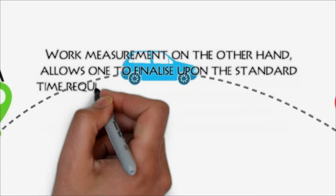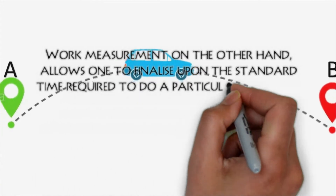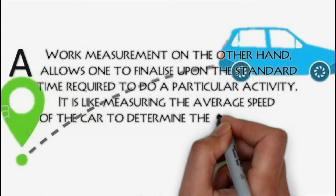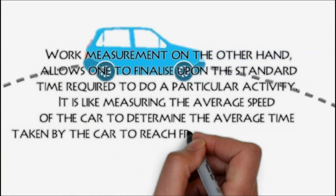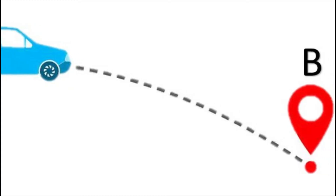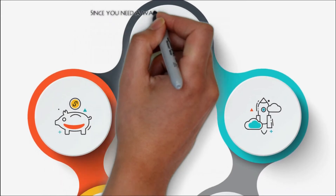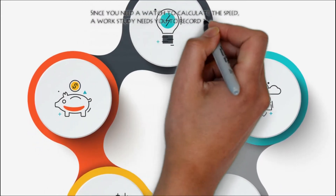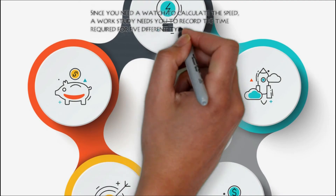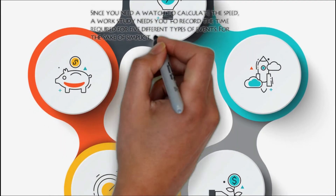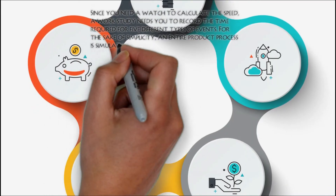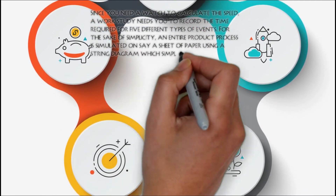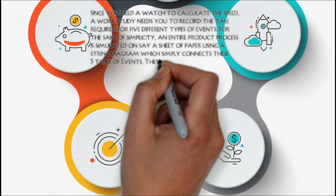Work measurement, on the other hand, allows one to finalize the standard time required to do a particular activity. It is like measuring the average speed of a car to determine the average time taken by the car to reach from place A to place B. Since you need a watch to calculate the speed, a work study needs you to record the time required for five different types of events. For simplicity, an entire production process is simulated on, say, a sheet of paper using a string diagram, which simply connects these five types of events.